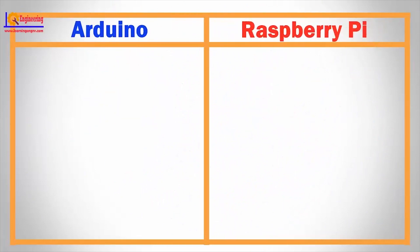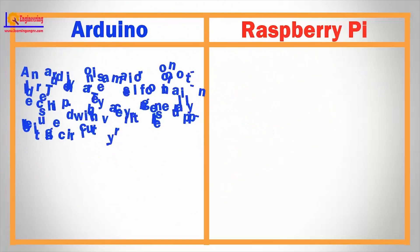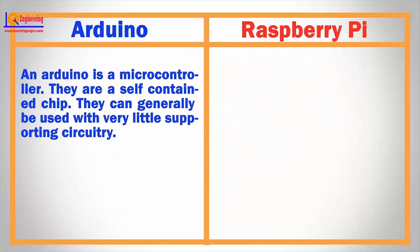An Arduino is a microcontroller and a self-contained chip. They can generally be used with very little supporting circuitry.